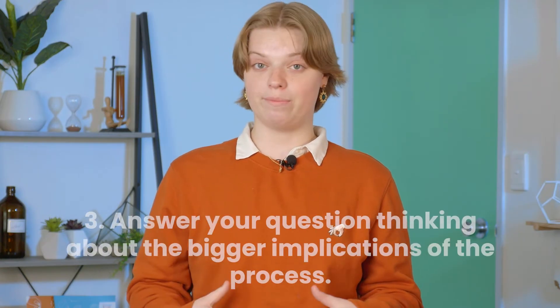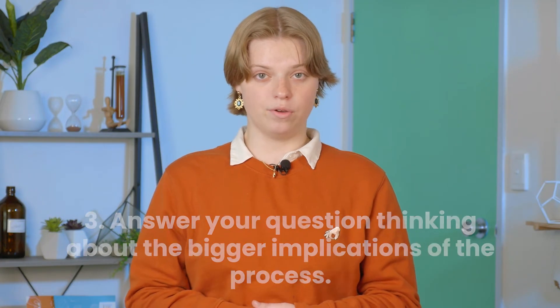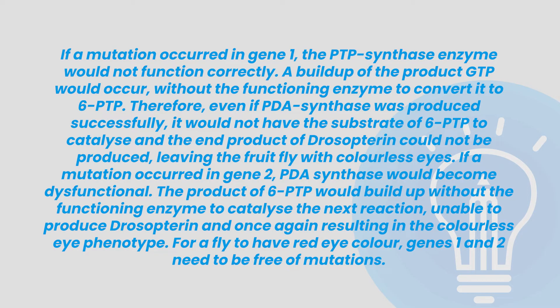Now we need to discuss. Step 3: answer your question thinking about the bigger implications of this process. If a mutation occurred in gene 1, the PTP synthase enzyme would not function correctly. A buildup of the product GTP would occur without the functioning enzyme to convert it to 6-PTP. Therefore, even if the PDA synthase was produced successfully, it would not have the substrate of 6-PTP to catalyse and the end product of Drosopterin could not be produced, leaving the fruit fly with colourless eyes. If a mutation occurred in gene 2, PDA synthase would become dysfunctional. The product of 6-PTP would build up without the functioning enzyme to catalyse the next reaction, unable to produce Drosopterin, and once again resulting in the colourless eye phenotype. For a fly to have red eye colour, genes 1 and 2 need to be free of mutations.